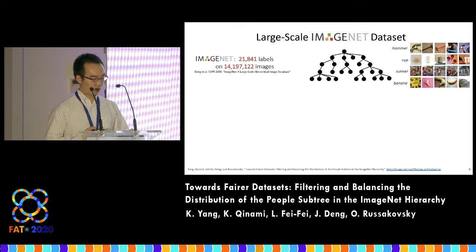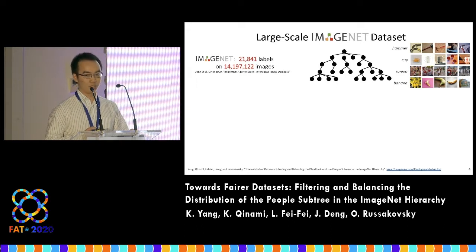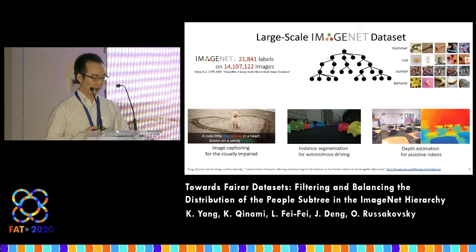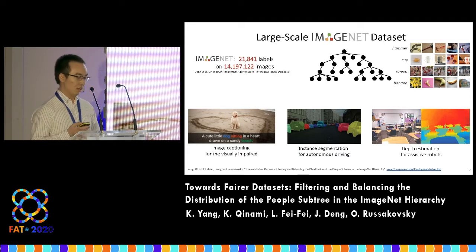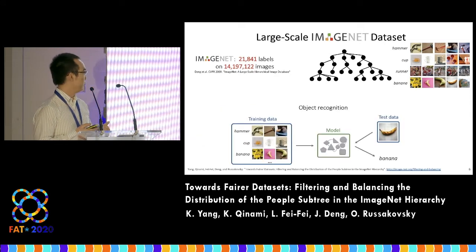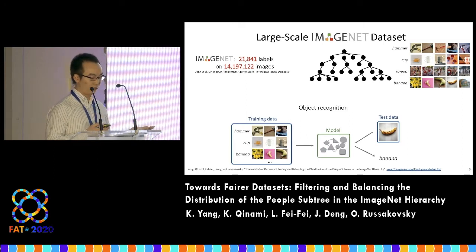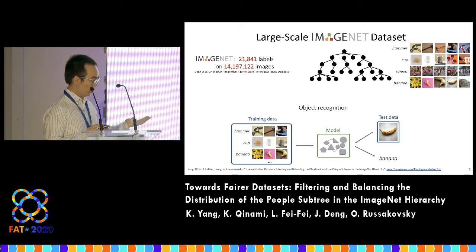ImageNet is a hierarchical ontology of 22,000 labels on more than 14 million images. The scale of the data enabled applying computer vision models to a wide range of social good applications. However, ImageNet was originally created for the task of object recognition.